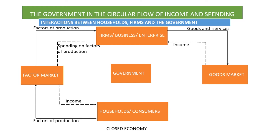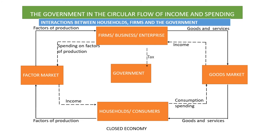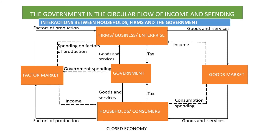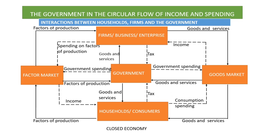The households have earned income from selling the factors of production, and now they spend their income in the goods market to get goods and services. Businesses pay tax to the government and the government provides goods and services. Households also pay tax to the government and receive goods and services. The government also spends income in the factor market by purchasing factors of production, and spends money in the goods market to get goods and services.